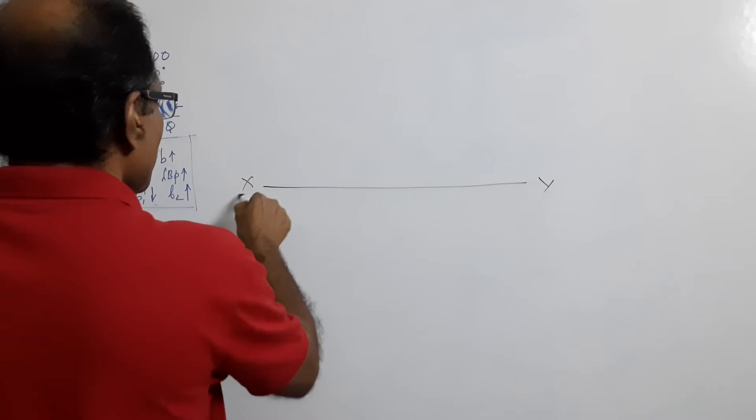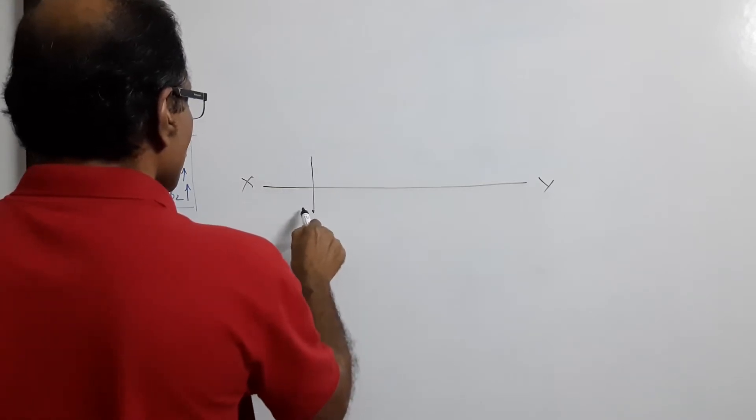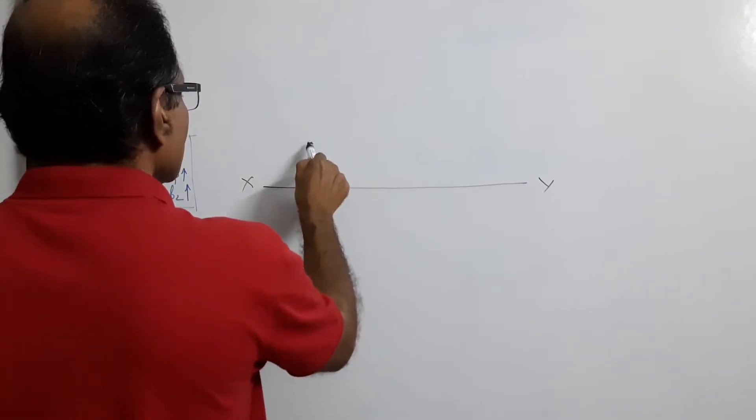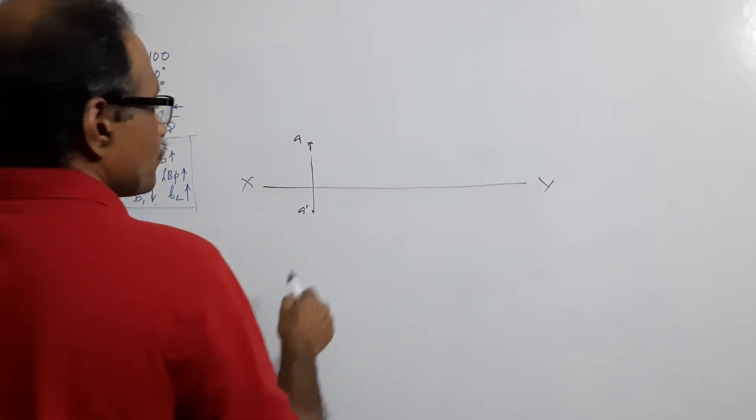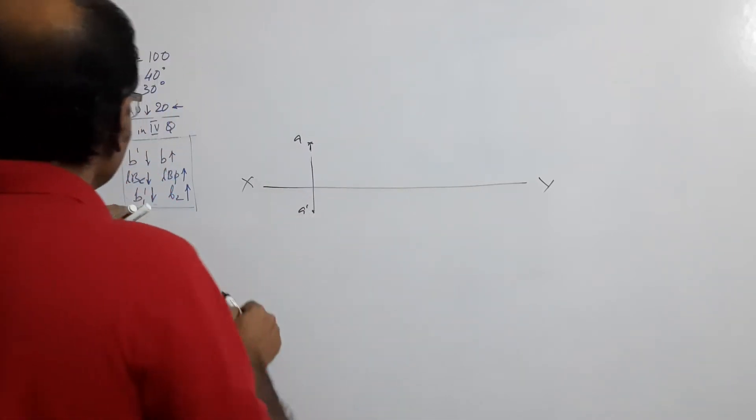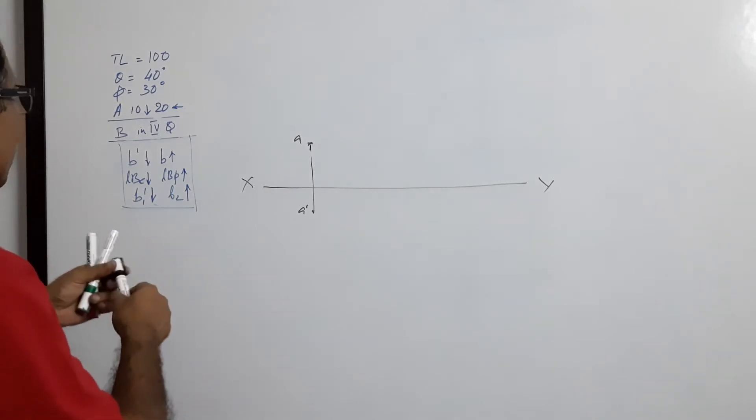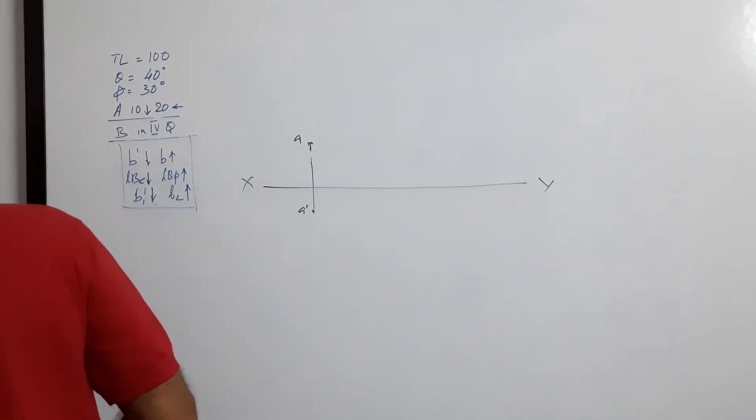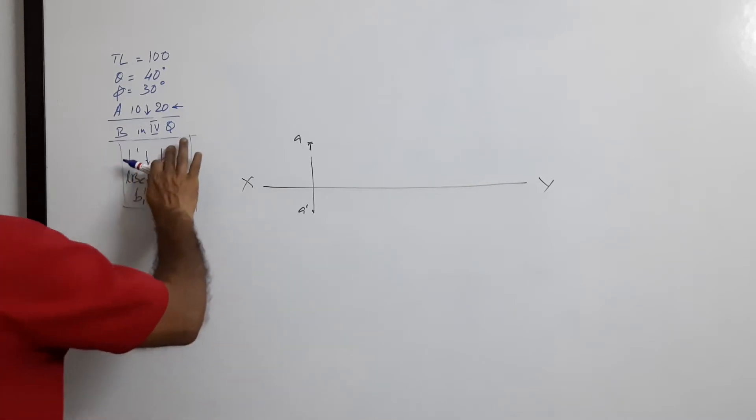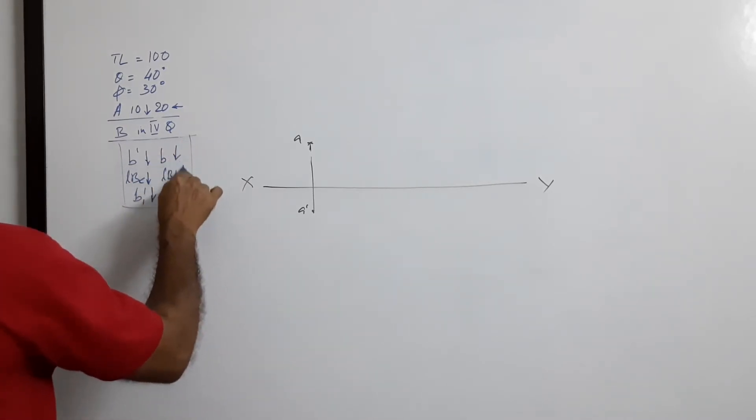When end A is in third quarter and end B is in fourth quarter, what happens? Both will come below XY plane.